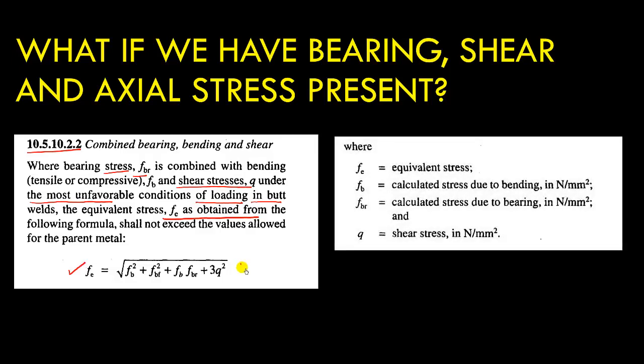The different terms in this expression are: F_E is the equivalent stress; F_V is the calculated stress due to bending in Newton per mm square; F_VR is the calculated stress due to bearing; and Q is the shear stress in Newton per millimeter square. We discussed two situations — one with two kinds of stresses (shear plus compression, or shear plus tension), and another where bearing, shear, and axial forces are all present. We can also calculate the equivalent force by multiplying the stress by the throat thickness times the length, which gives the effective area.